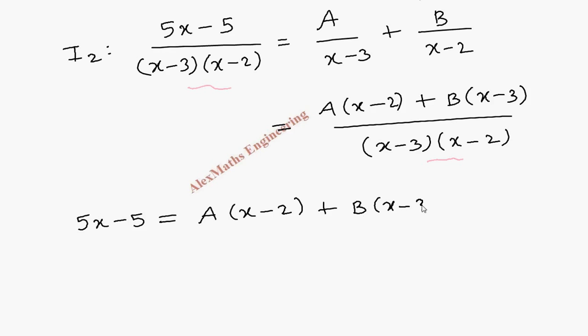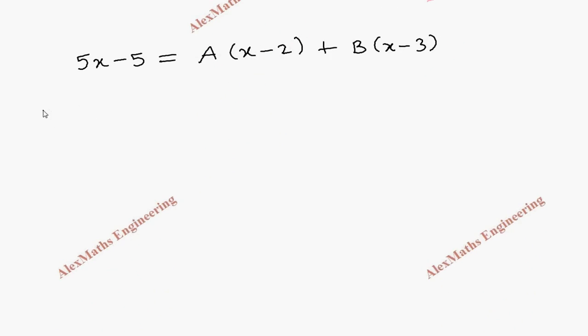Now let's take a suitable value for x to find the constant A and B. Let's take x as 2. If I put 2 here, 5 times 2 is 10, 10 - 5 is 5, and this will become 0, and this will become -B. So from this the value of B we got as -5.